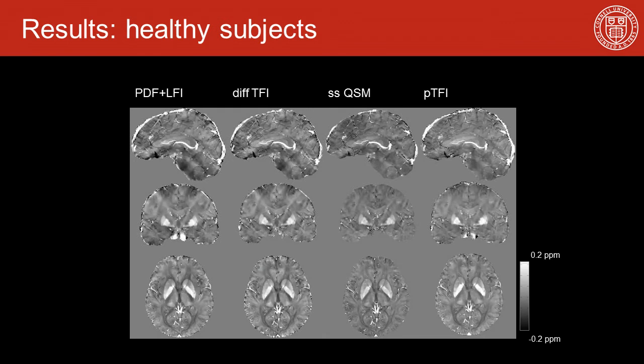Here shows an example of the QSM map comparison for all methods. We notice that the homogeneity of the QSM map at the brain boundary is improved in preconditioned total field inversion. We also notice that brain cortex structures such as the sagittal sinus are eroded in the two Laplacian-based methods as required by the Laplacian operation; however, the same structure is preserved in preconditioned total field inversion.